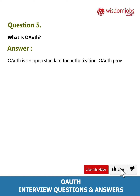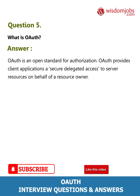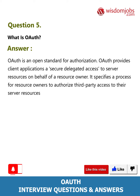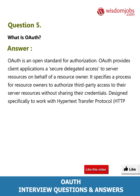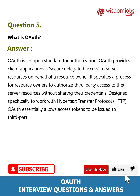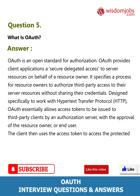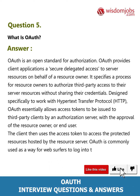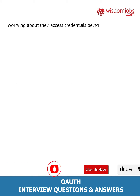Question 5: What is OAuth? Answer: OAuth is an open standard for authorization. OAuth provides client applications a secure delegated access to server resources on behalf of a resource owner. It specifies a process for resource owners to authorize third-party access to their server resources without sharing their credentials. Designed specifically to work with HTTP, OAuth essentially allows access tokens to be issued to third-party clients by an authorization server with the approval of the resource owner or end user. The client then uses the access token to access the protected resources hosted by the resource server. OAuth is commonly used as a way for web surfers to log in to third-party websites using their Google, Facebook, or Twitter accounts without worrying about their access credentials being compromised.